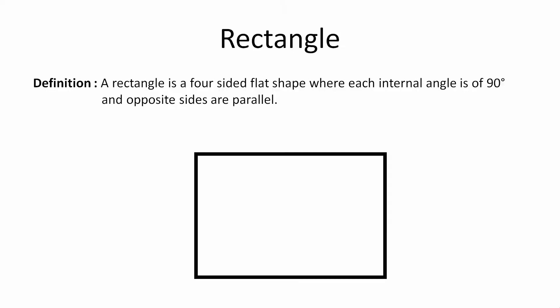Let's start with a short definition of rectangle. A rectangle is a four-sided flat shape where each internal angle is 90 degrees and opposite sides are parallel. Now the question is how to draw a rectangle using the graphics.h library.